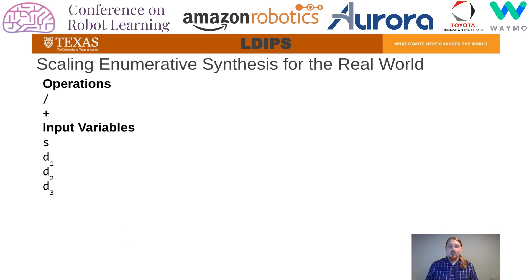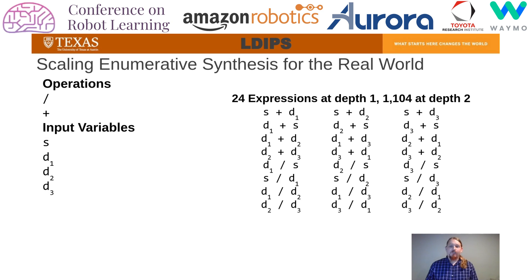To understand how dimensional analysis is accounted for, we will start with a simple example of enumerative synthesis. In the first pass of enumeration, 24 expressions are enumerated and shown here. To search for more complex expressions, the synthesizer will need to consider all combinations of these new expressions. At depth 2, the number of expressions will be 1,104. For any reasonable action selection policy, the synthesis problem quickly becomes intractable.